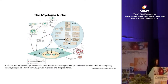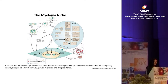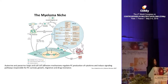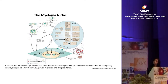Work from Dana-Farber, from Nicki Munshi and Dr. Anderson, has shown that there are autocrine and paracrine loops that are generated, and cell-to-cell adhesion mechanisms that regulate the survival of these cells. Showing here the key signaling pathways identified over the years: on top, PI3 kinase with AKT and PKC inducing proliferation, and JAK-STAT3 essential for proliferation of these cells.